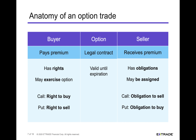We call this the anatomy of an option trade. Basically you've got a buyer and a seller and the option that's being traded. Let's begin in the middle column labeled option. Stocks are traded in shares — one share, five shares, 100 shares. Options on the other hand are traded in contracts, and one contract generally represents 100 shares of the underlying stock. There may be some exceptions, but by and large an option contract will represent 100 shares. It is in fact a legal contract, and as with any legal contract there are certain rights and obligations that attend to it.